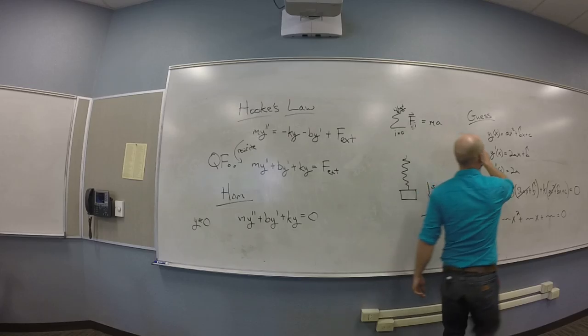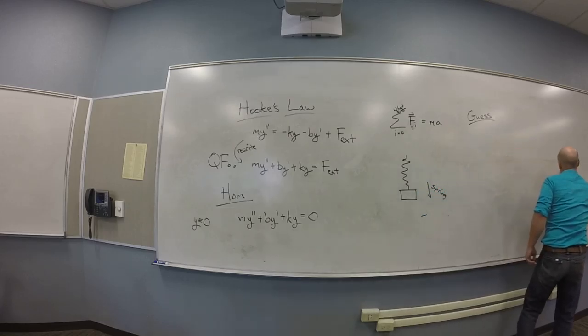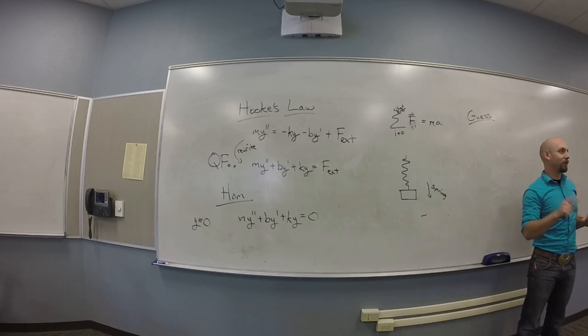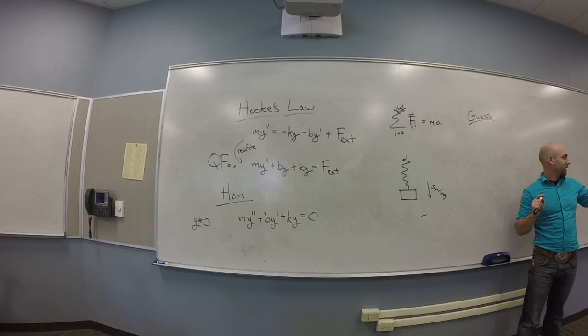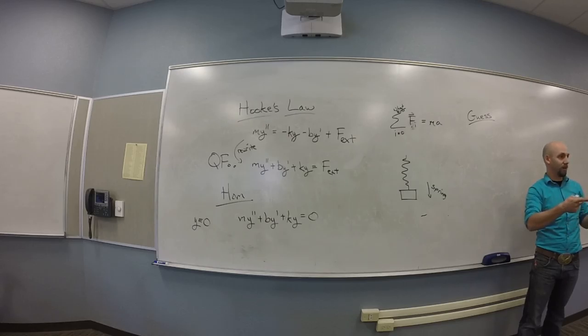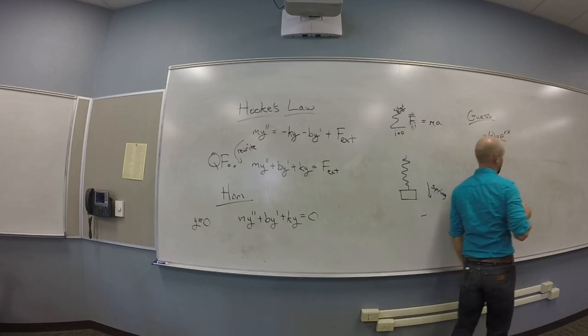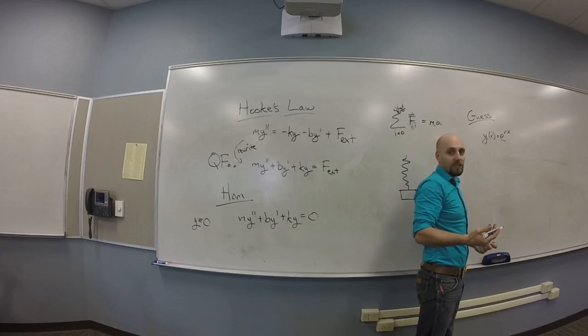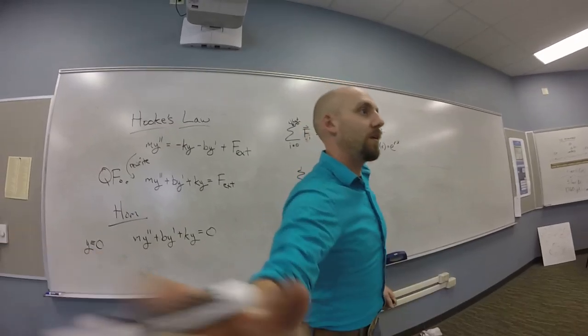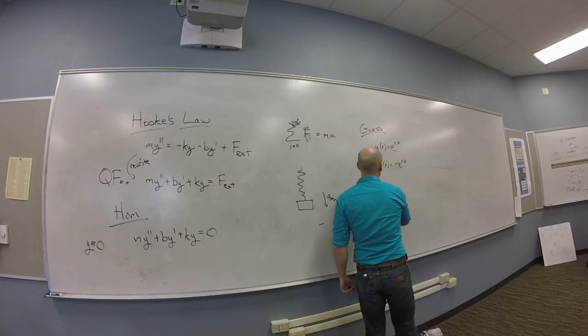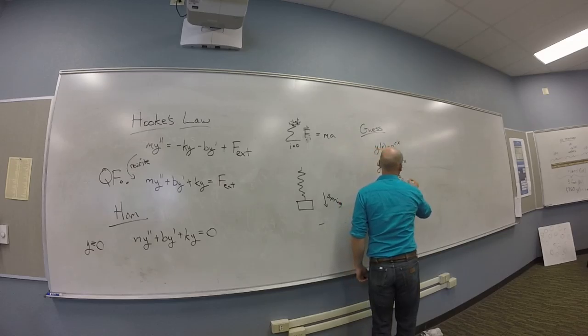Try this on for size. What's a thing that kicks out a number every time you differentiate it? E to the x. Close. E to the x is just itself every time you differentiate. E to the ax kicks a number every time you differentiate it, right? Kicks out another a. So what if I try that as my guess? What if I try y of x is e to the rx? It's just a guess, I can try whatever the hell I want. There's no guarantee if it's going to work. So that means y prime is equal to r e to the rx. And y double prime? R squared e to the rx.